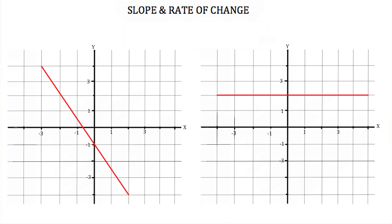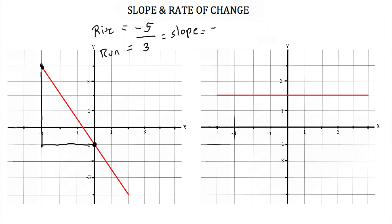Here are two more examples. Let's pick this point and this point. Here, we're going to go down five, so our rise is a negative five because we went down. Then we're going to go to the right two and three, so our run is a positive three. So our slope is negative five-thirds.